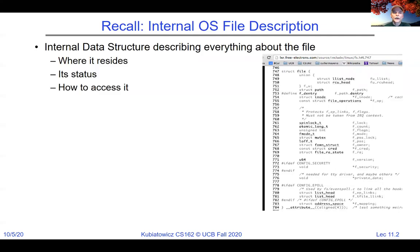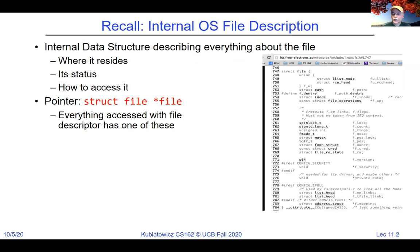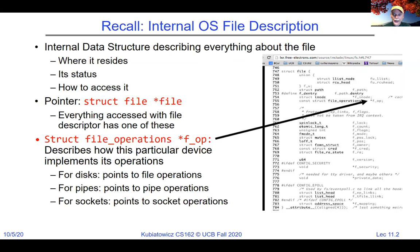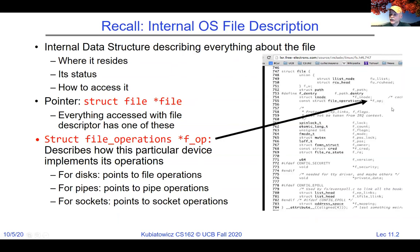If you remember from last time, we talked about what the descriptions look like inside the kernel when you open a file. We had pointed at a file structure and what I wanted to point out was the FOP pointer, which points to a set of operations — things like how to read, how to write, how to open, etc. This allows you to have that uniform interface of open, close, read, and write for everything from files to pipes.